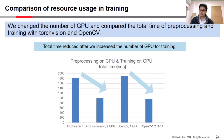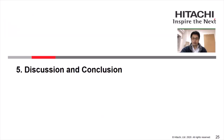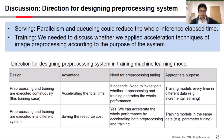Now let us discuss how we accelerate preprocessing and overall performance in both serving and training phases. We discuss how we design the preprocessing system in both phases. In the serving phase, parallelism and queuing enabled us to reduce the overall inference time. On the other hand, in the training phase, we need to discuss whether we need to accelerate image preprocessing according to the purpose of the system.